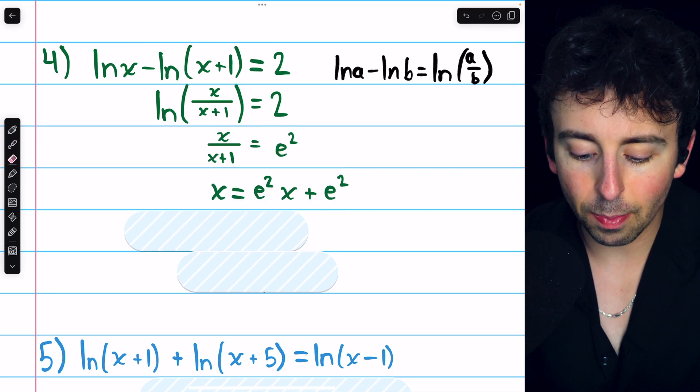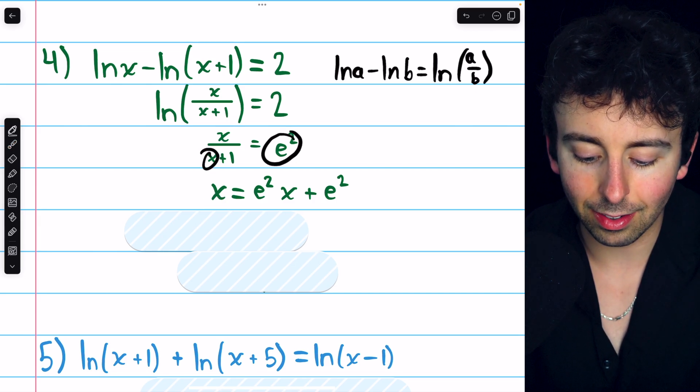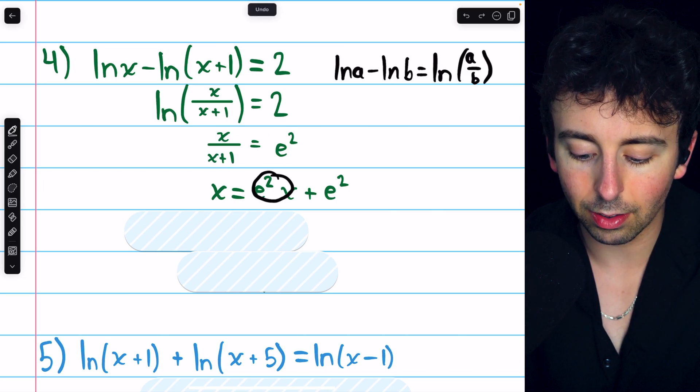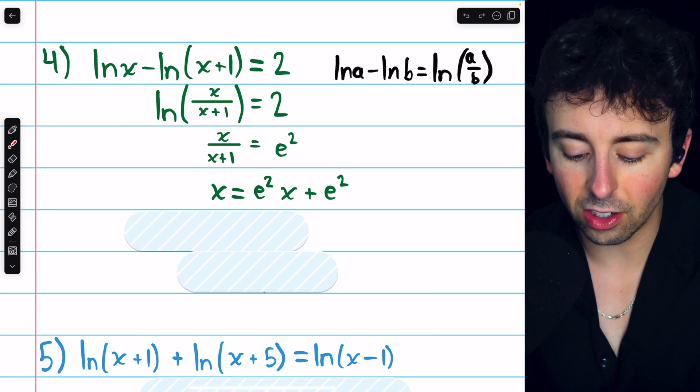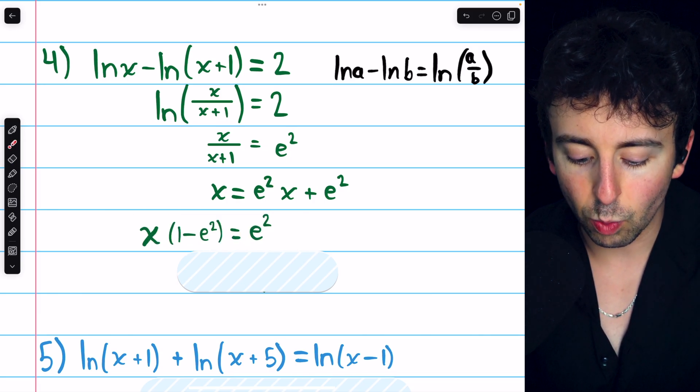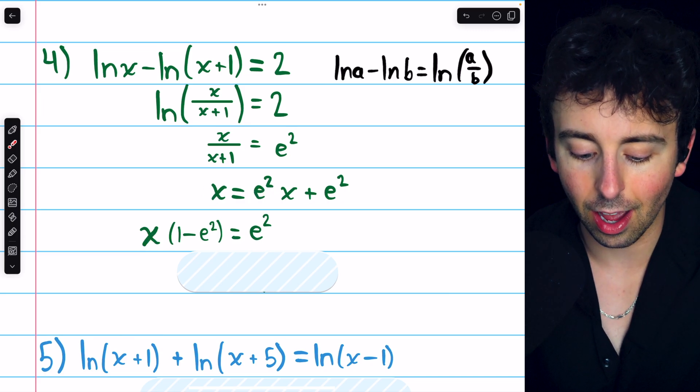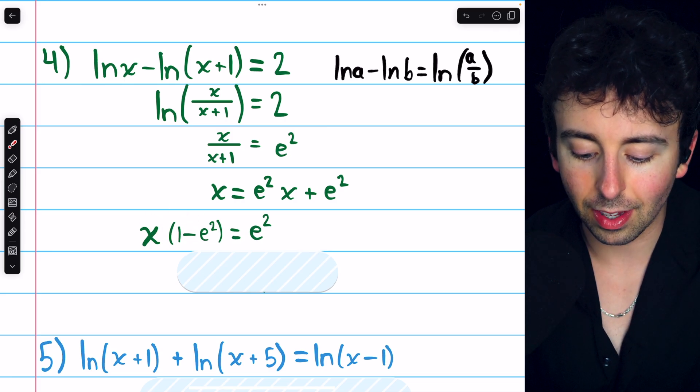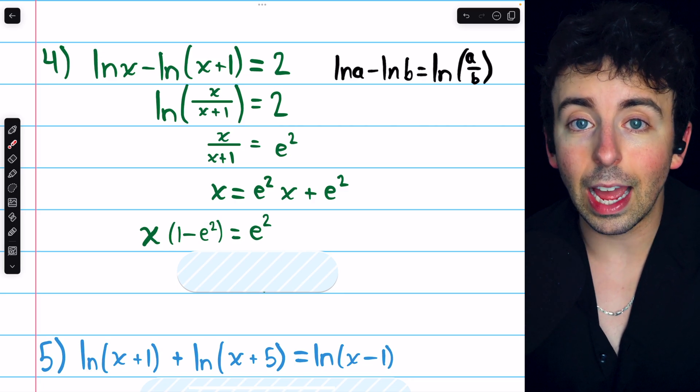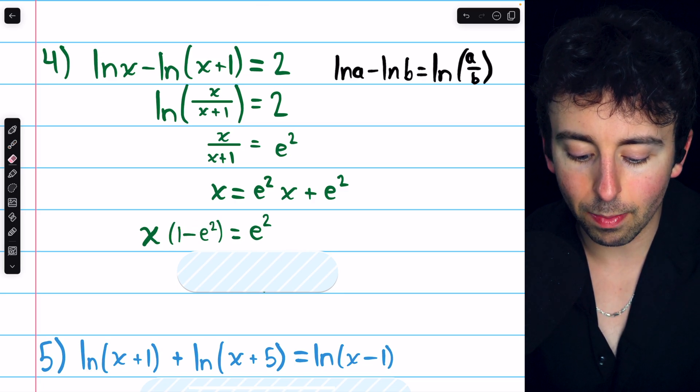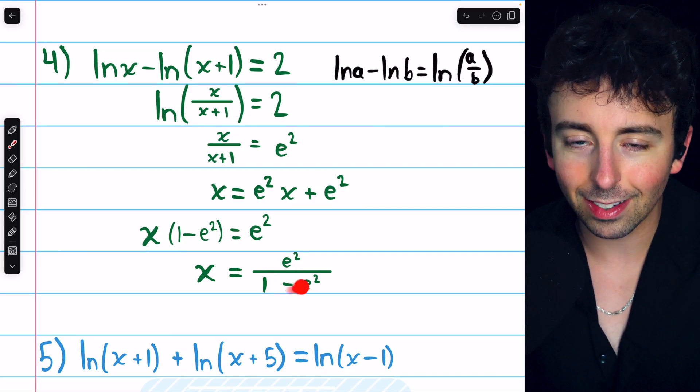On the left, that would just cancel out the ln, so we would have x over x plus one. And on the right, we would have e to the power of two. Now we can multiply both sides by x plus one to get x equals e to the two times x plus e to the two. Now we're just trying to get x by itself, so let's subtract e to the two x from both sides. Thus, we have one x minus e to the two x's, that's just x times one minus e to the two on the left side. And then on the right, all we've got left is that e to the power of two. Now we can solve for x by dividing both sides by one minus e to the two. So x equals e to the two divided by one minus e to the two.